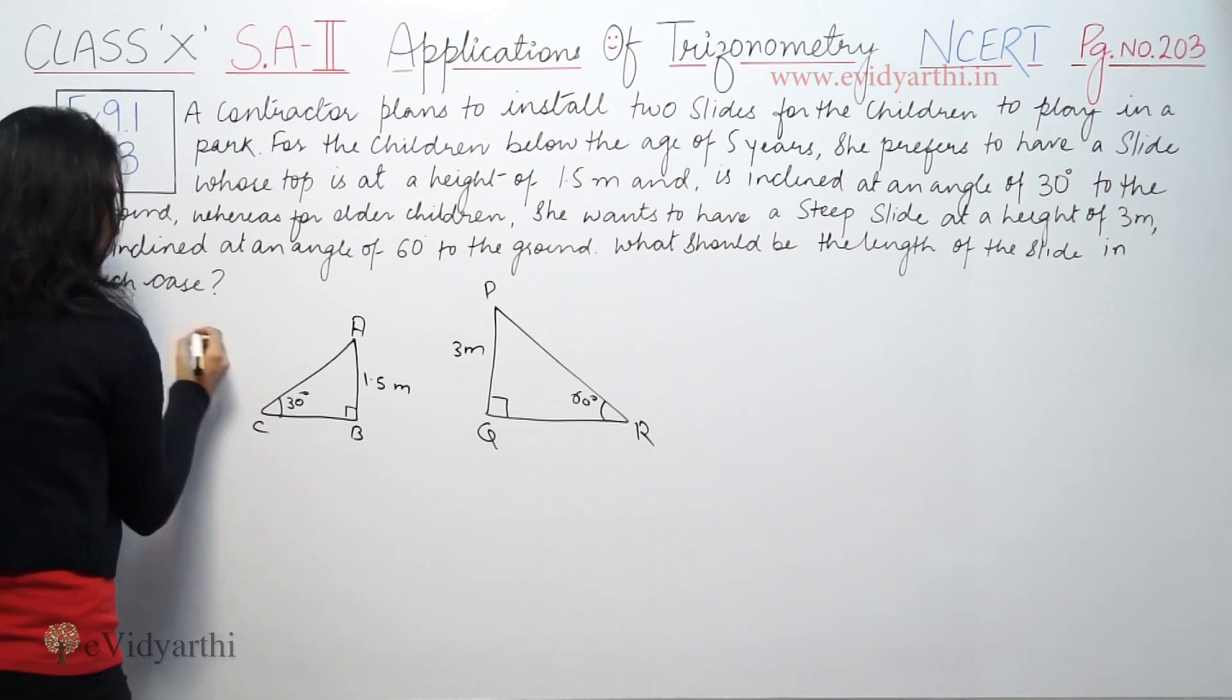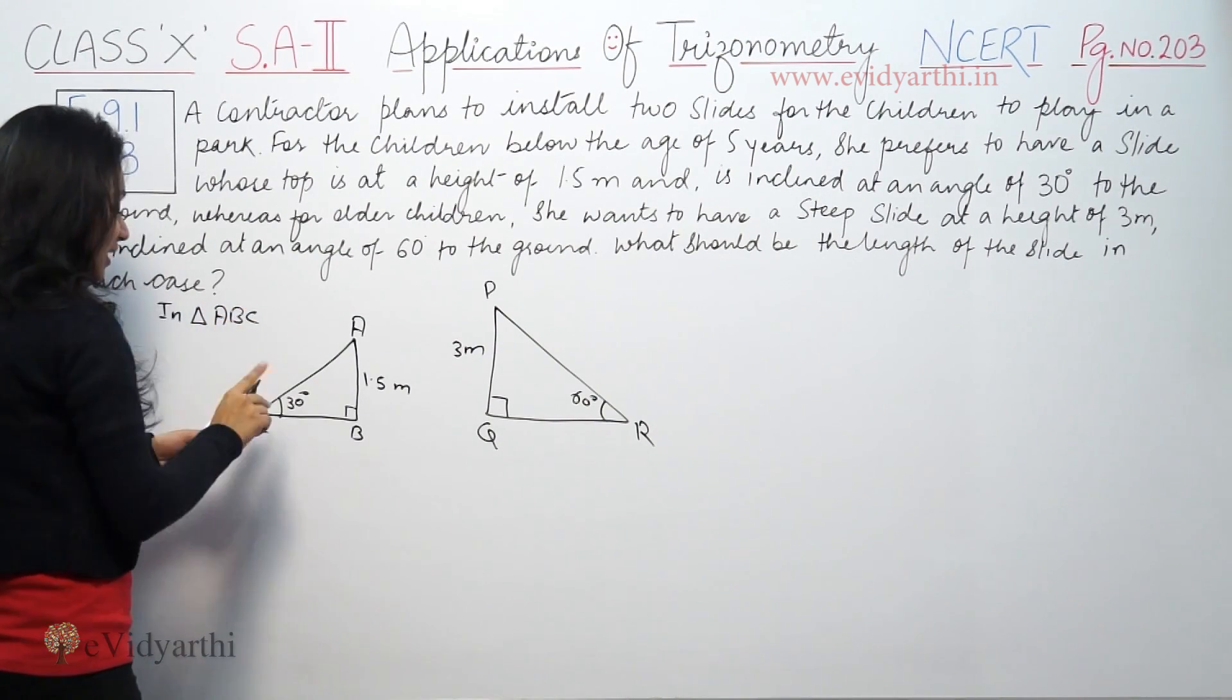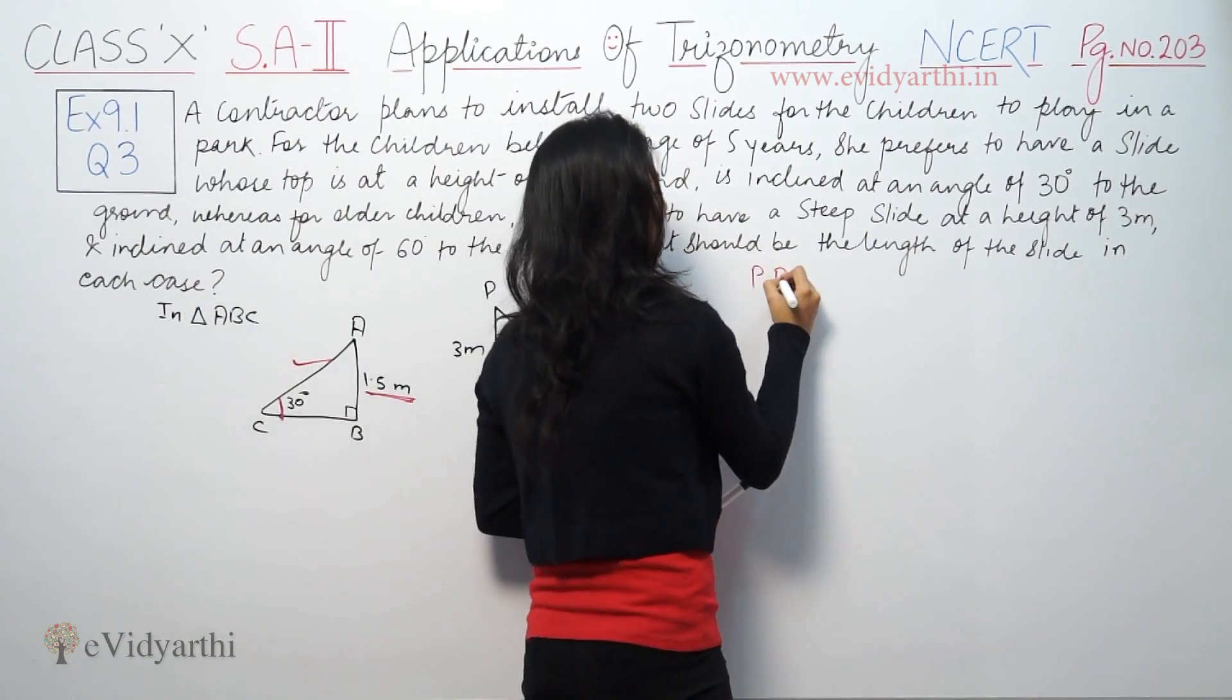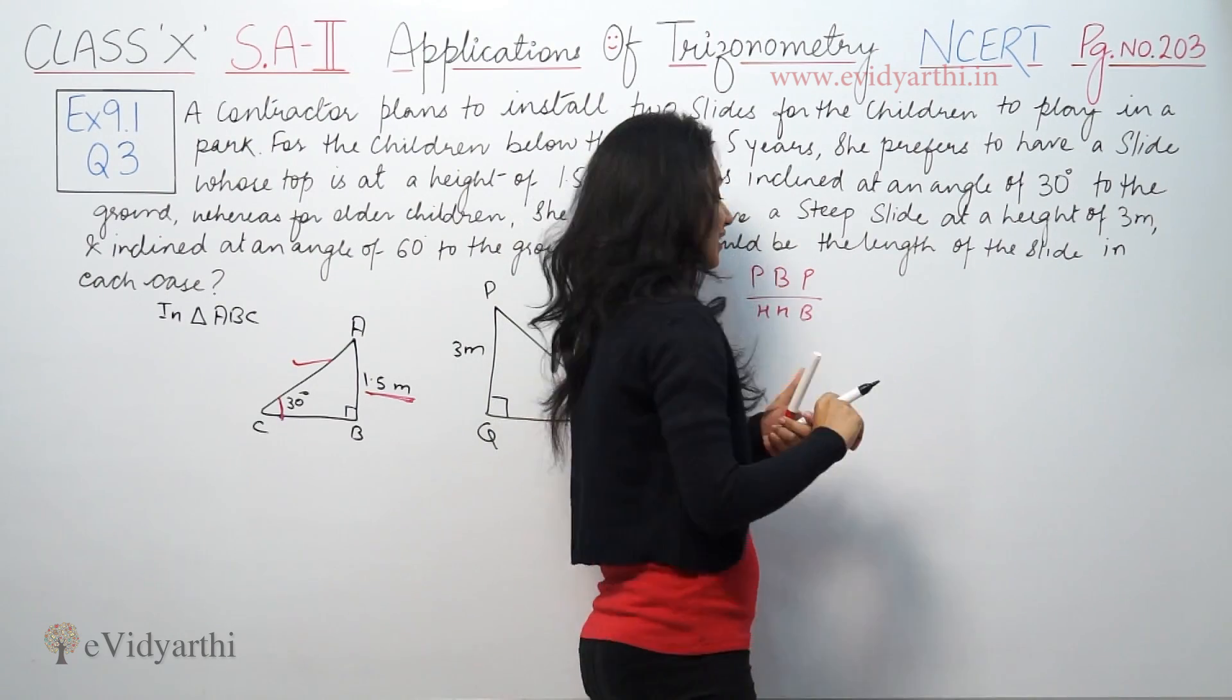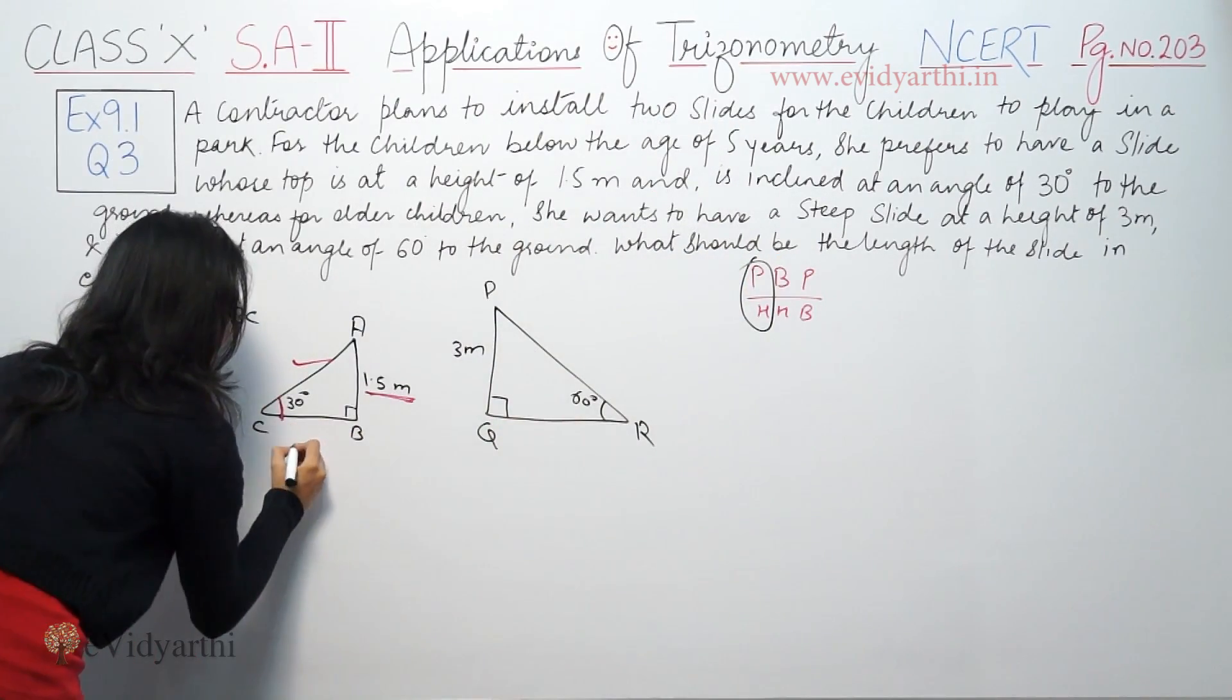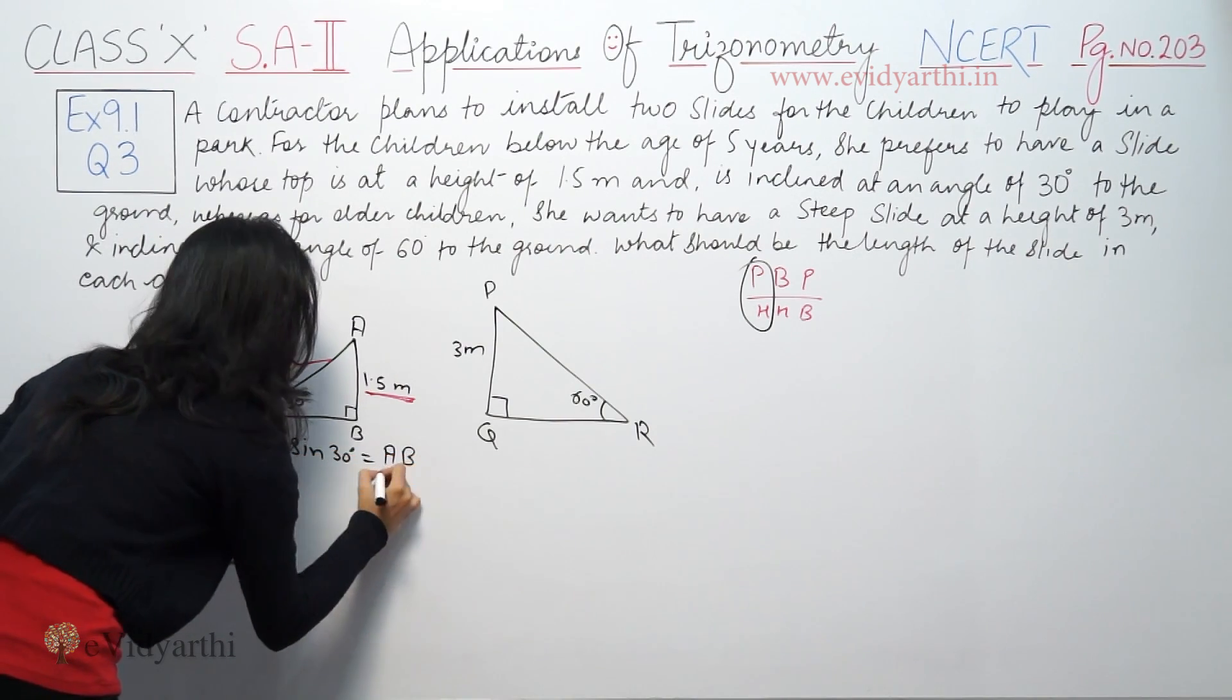So here in triangle ABC, sin 30 degrees is equal to AB by AC. Sin 30 is equal to 1 by 2, and AB is 1.5 by AC.